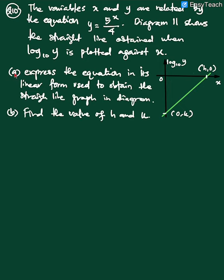Okay, so the question asks you to find two things. First one, A: express the equation in its linear form used to obtain the straight line graph in diagram. So means that you have to make this equation y equals 5 power of x over 4 to the linear form. The second one, find the value of H and K. So this is your H here, the x coordinate or x intercept. And your K now is y intercept. So are you ready? Let's learn how to answer this question.